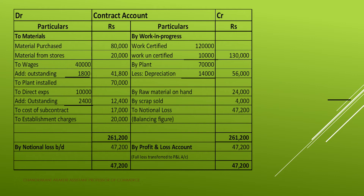Next we go to the credit side: by work in progress. Work certified is Rs. 1,20,000 as per point 6. Point 2 states that included in the above summary of entries are wages Rs. 2,400 and other expenses Rs. 4,000 since certification.